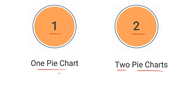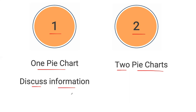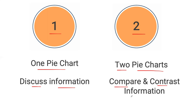If you have one pie chart, you most likely just have to discuss the information you see. But if you have two pie charts, you will most likely have to compare and contrast the information you see in each one. This is probably the more difficult example and where students tend to make mistakes. Usually students will just discuss the information in the two pie charts individually, but you really should compare and contrast it. That is why the test has given you two different pie charts.